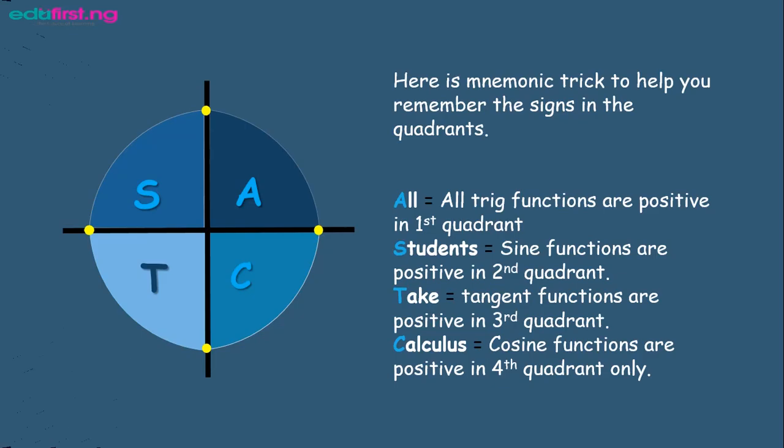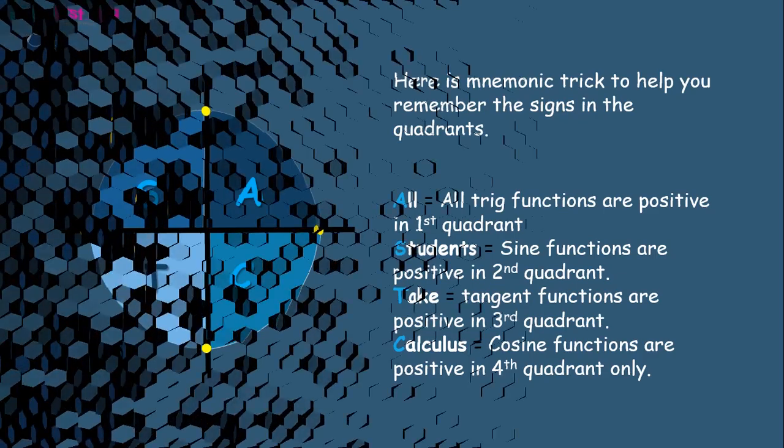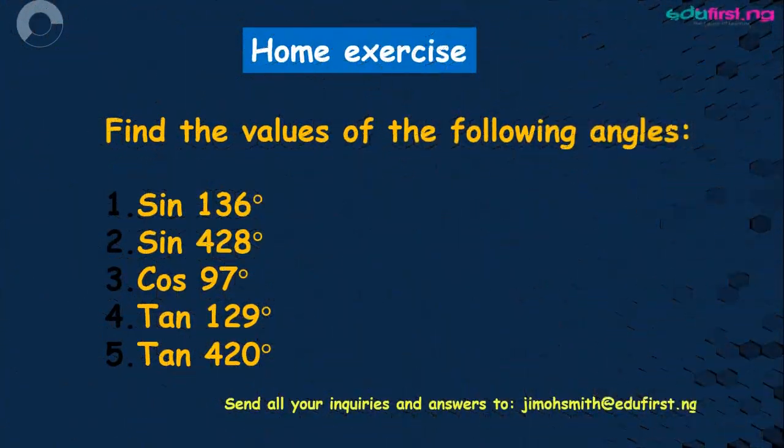I hope you've been able to learn about the behavior of trig ratios in relation to these quadrants. Here are some angles for you to find the sine, cosine, and tangent of. Pay close attention to the signs — whether they are negative or positive. I'll be waiting to receive your exercises and answers. See you in the next class.